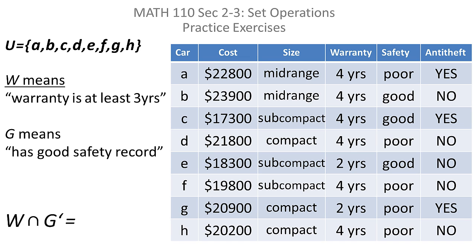To solve this problem you have to be able to read this table. It's obviously about cars and warranties and safety and things like that. In particular, they're giving us cars and just calling them A, B, C, D, E, F, G, and H.